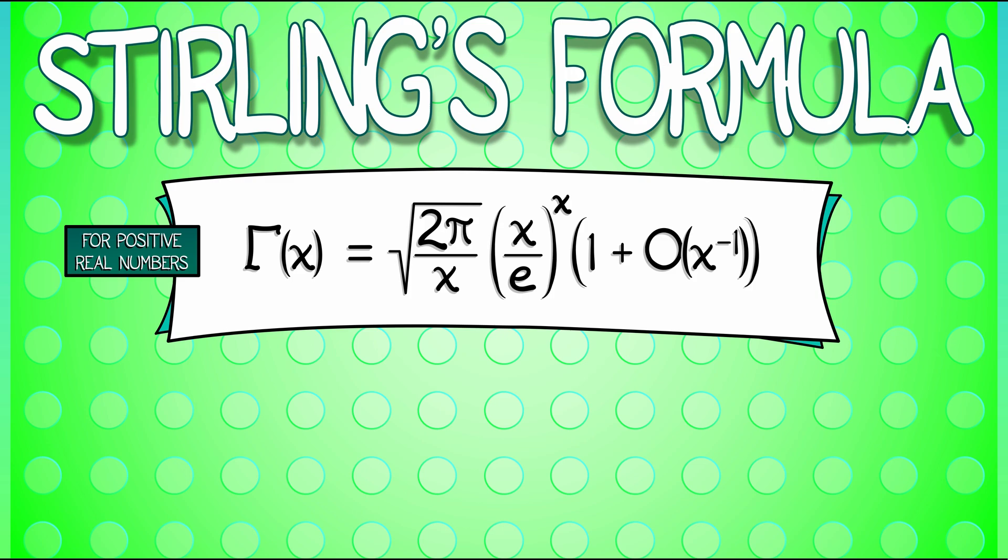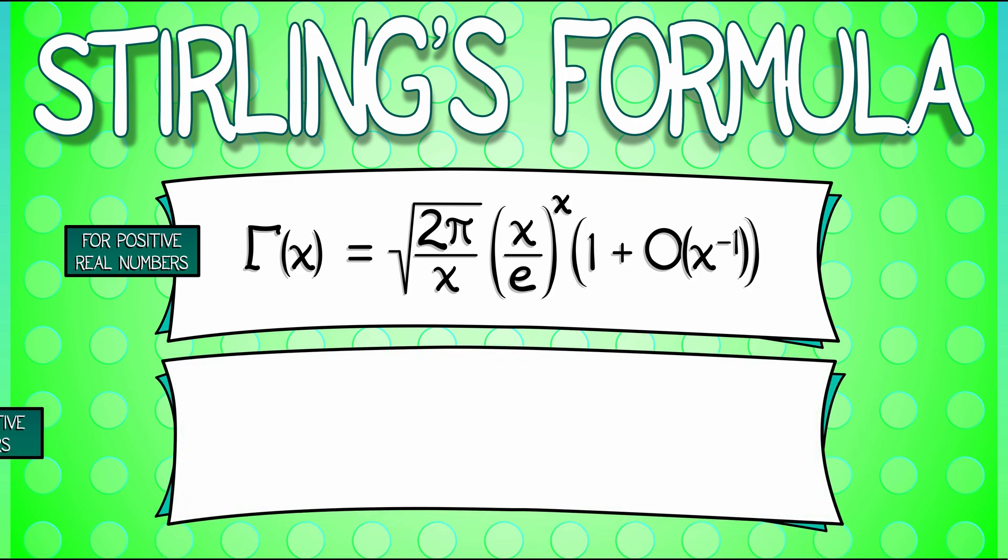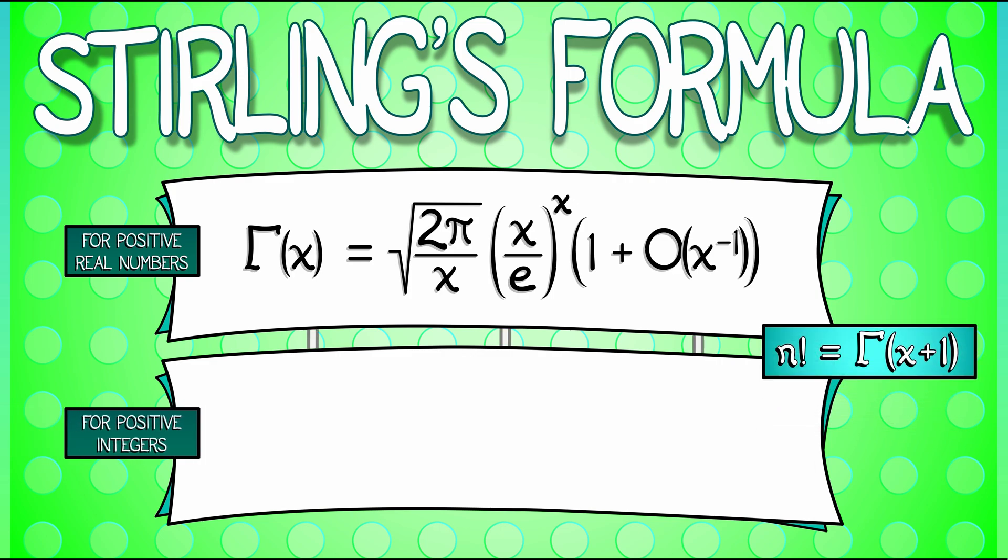Now, because n factorial is really gamma of x plus 1, you can get an equivalent and much more popular version for n factorial. n factorial can be written as square root of 2 pi n, quantity n over e to the nth power, quantity 1 plus big O of 1 over n.